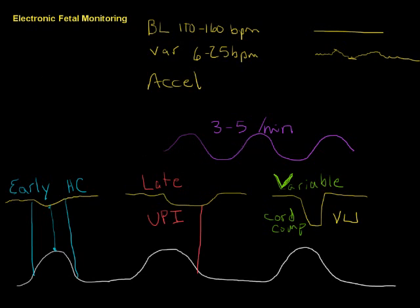Recently, the obstetricians have gotten together and decided to create classifications. There are now three classifications of these traces. Category one is normal. Everything looks good. In order to be category one, it has to have baseline in the normal range, presence of variability, you'd like to see some accelerations and no decelerations.